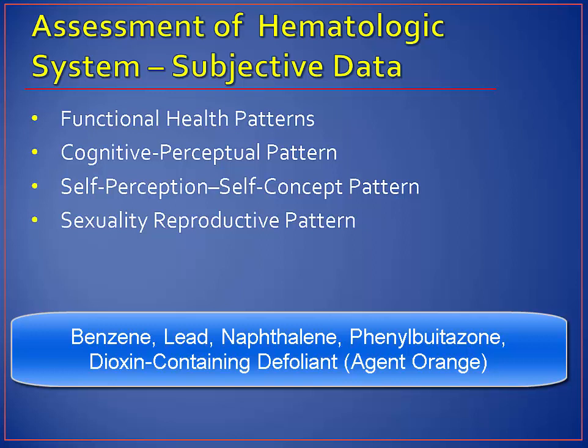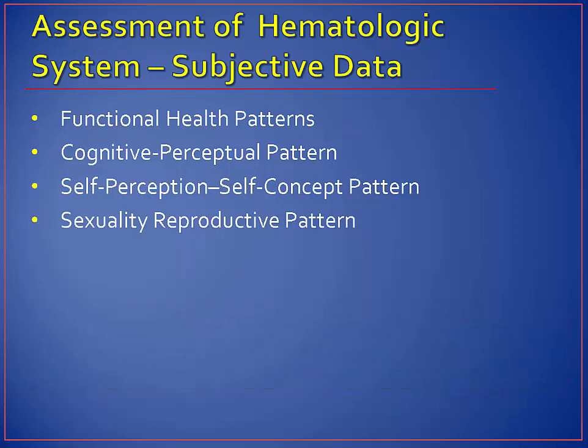Ask the patient about a history in the military. Many Vietnam veterans were exposed to a dioxin-containing defoliant known as Agent Orange, which has been linked with leukemia and lymphoma. Sexually reproductive patterns: obtain a careful menstrual history from women, including the age at which menarche and menopause began, duration and amount of bleeding, incidence of clotting and cramping, and any other problems. Ask men if they have any problems related to impotence, because this is not uncommon in men with hematologic problems.